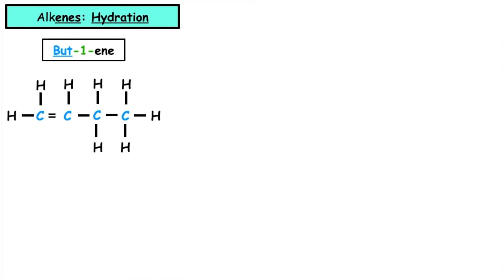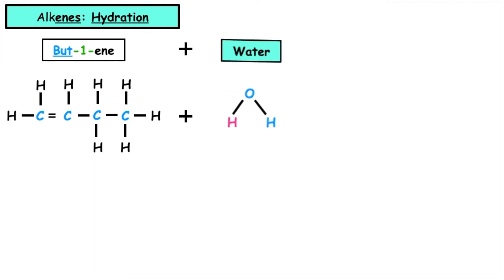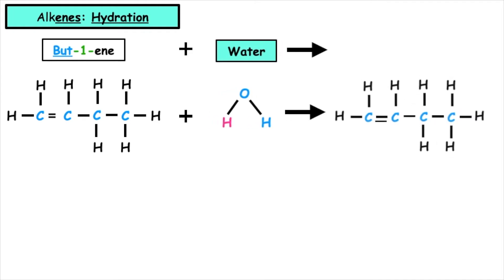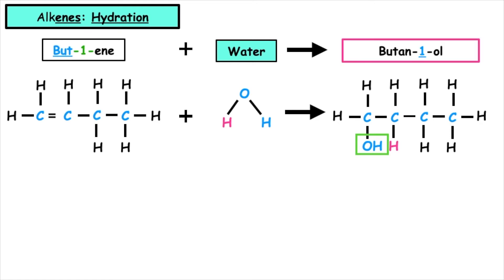When we increase the carbon chain length of an alkene, we know that the position of the carbon-to-carbon double bond can change. Let's have a look at when we use bute-1-ene. We can see that the carbon-to-carbon double bond is in position one. When we add a molecule of water, that carbon-to-carbon double bond will break and an H will add on to one and an OH will add on to the other. The product produced here — we want to focus on the OH and the position of that functional group — so the name of the product would be bute-1-ol.